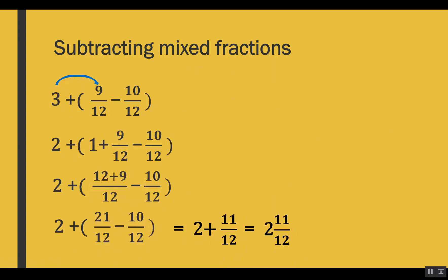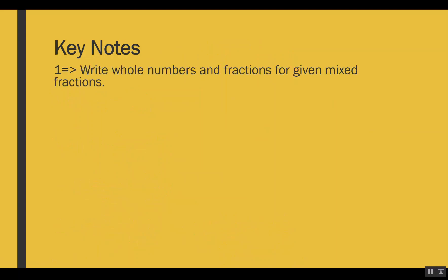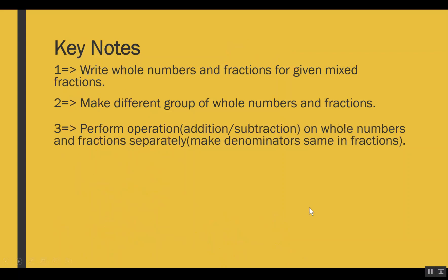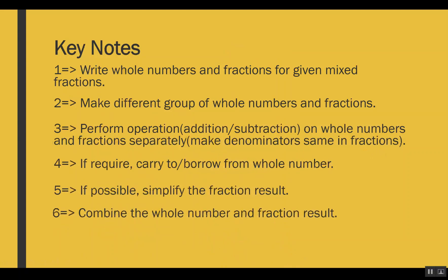Through these examples I explained addition and subtraction of mixed fractions with different denominators. The keynotes are: write the whole number and the fraction for each mixed fraction; make separate groups of whole numbers and fractions; perform the operation on whole numbers and fractions separately, but first make denominators the same in the fractions; if required, carry to or borrow from the whole number; if possible, simplify the fraction result; then combine the whole number and fraction to get the final result.